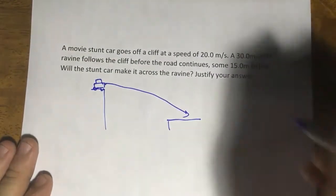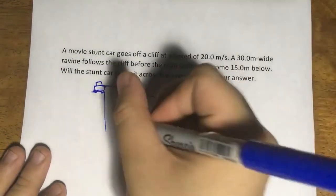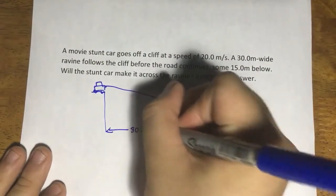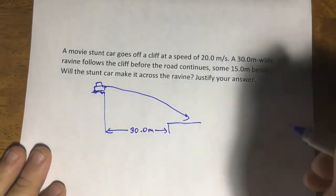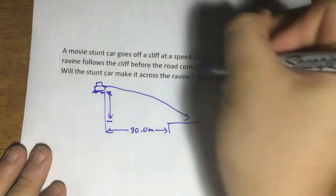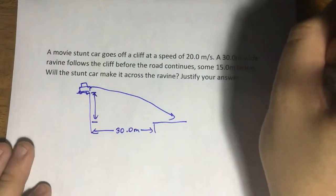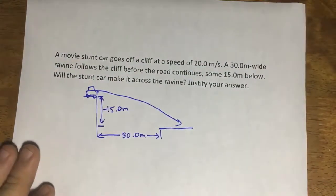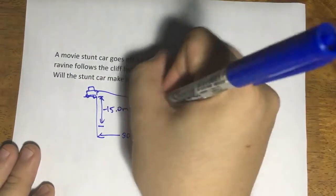We want to find out will it make it across this ravine which is 30.0 meters long. We know that the distance that it has to go down would be, according to the problem, 15 meters below. And this is in the negative direction. This is your delta y.